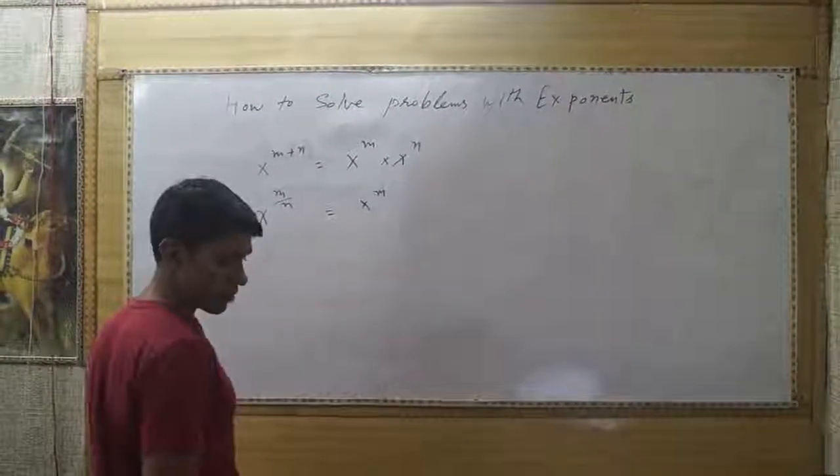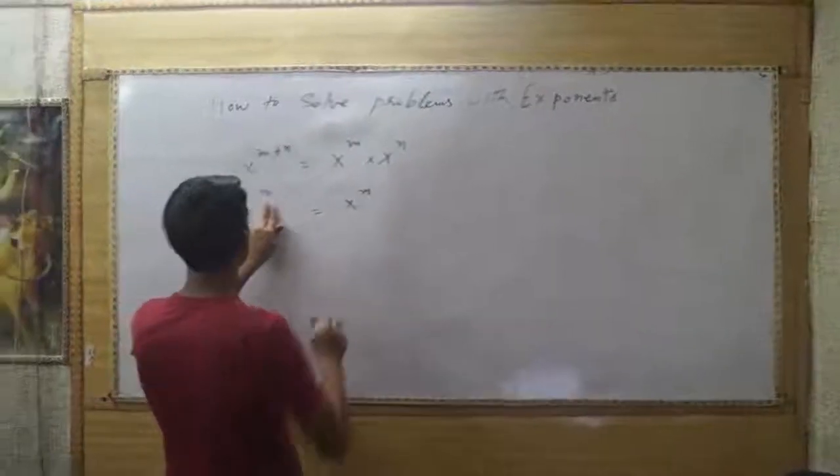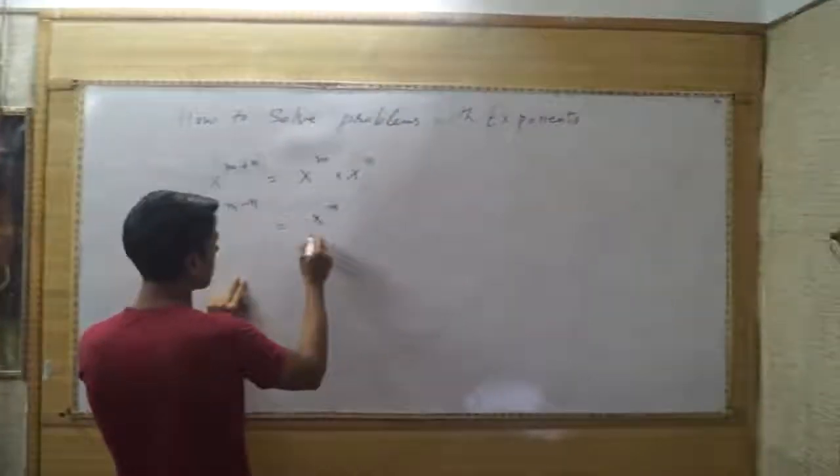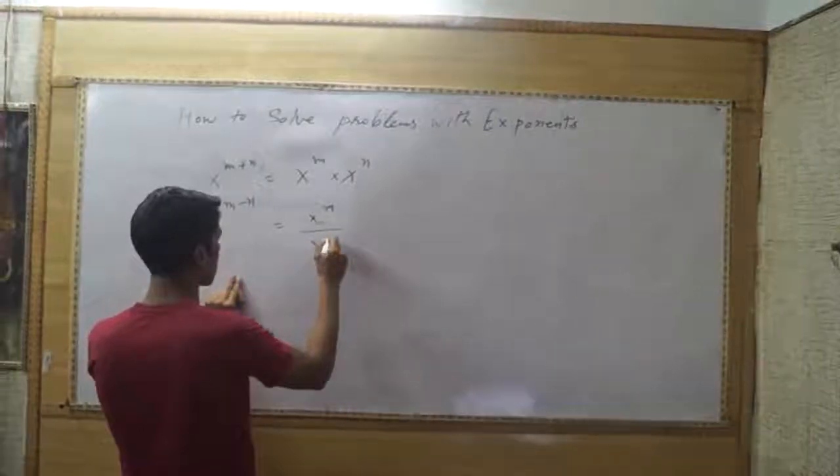You just run it. You just x minus n. So, you show it x to the n.